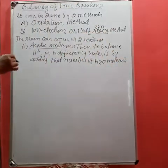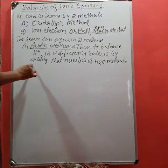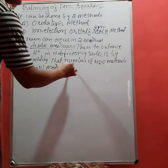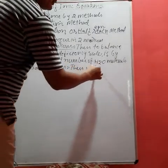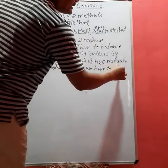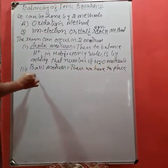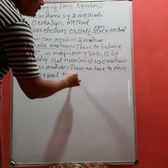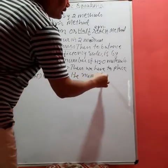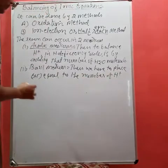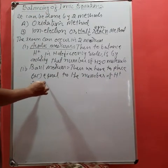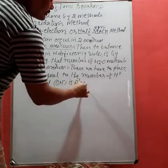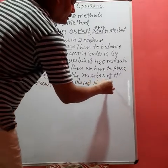In acidic medium, this is how it's done. In basic medium, we place OH anion equal to the number of H-cation present. OH anion is placed on both sides.